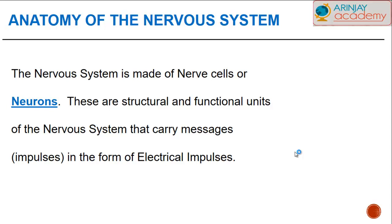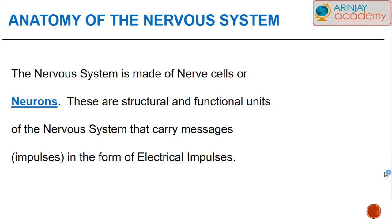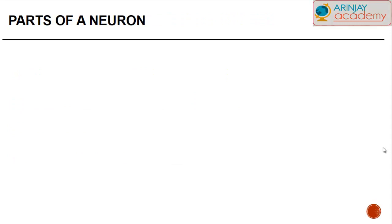Let's have a look at the nervous system. What is the nervous system and what exactly is it made up of? The nervous system is a grouping of different nerve cells put together called neurons. These neurons are structural and functional units of the nervous system that are responsible for carrying messages called impulses in the form of electrical impulses. If it were not for these neurons, we would not be able to detect our surroundings or our stimulus.